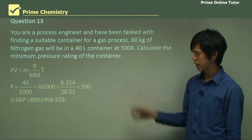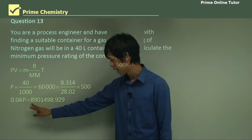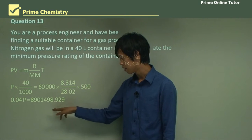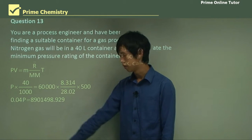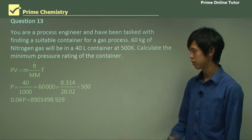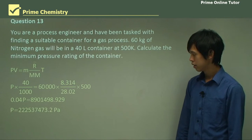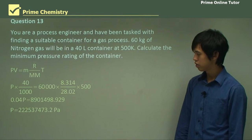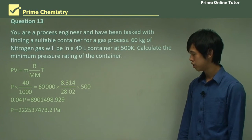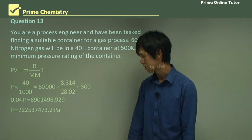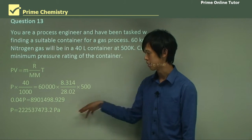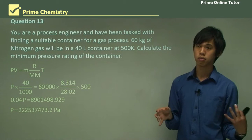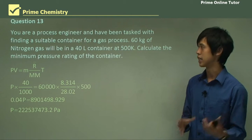So if we do the calculations, we get this. So 8901498.929 equals 0.04P. So we're looking for P. So we've got 222537473.2 pascals is the pressure in that system. That's the pressure within that system.